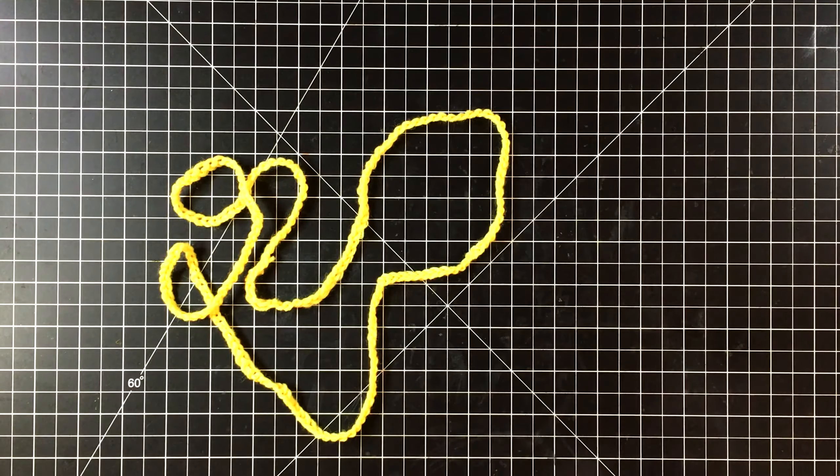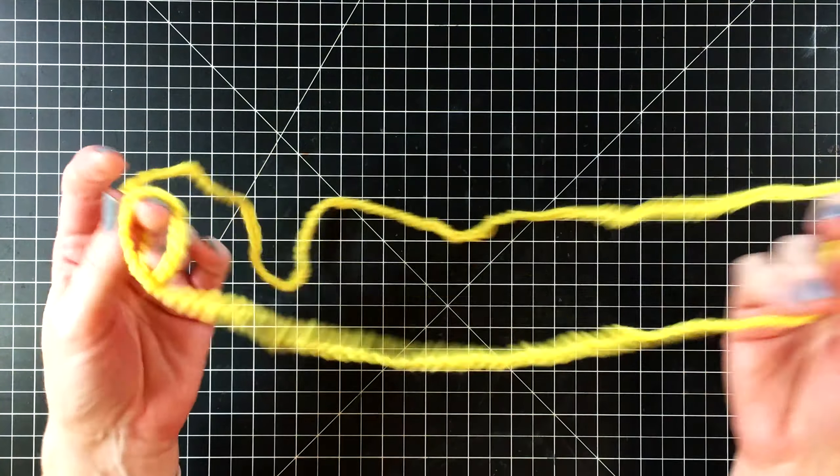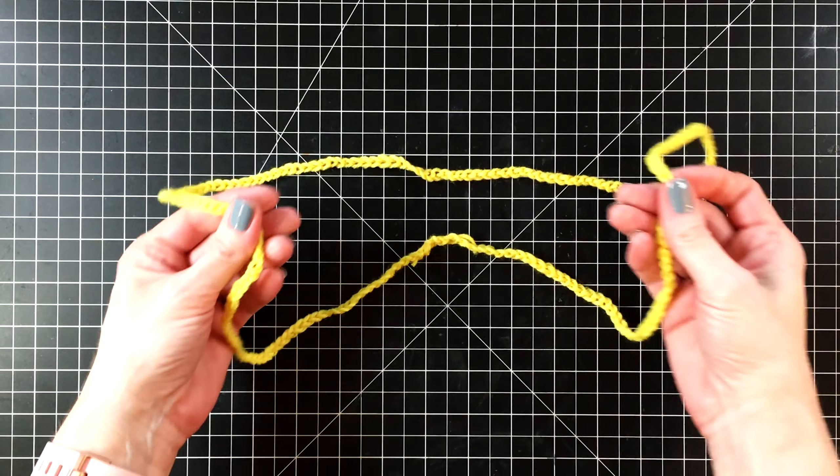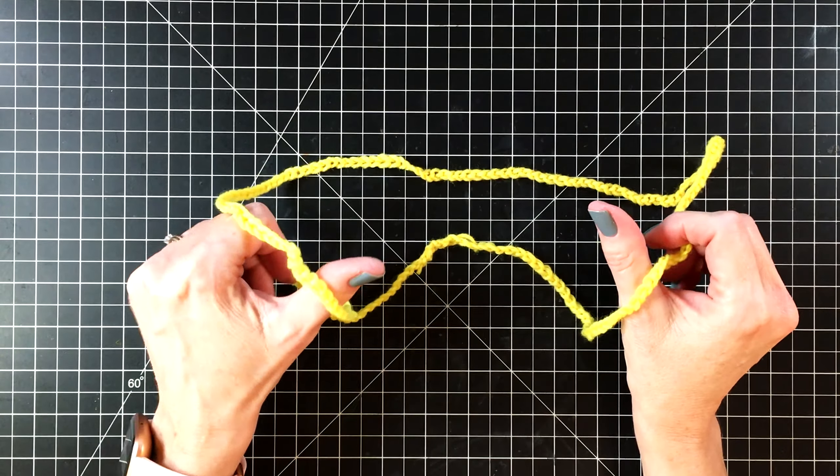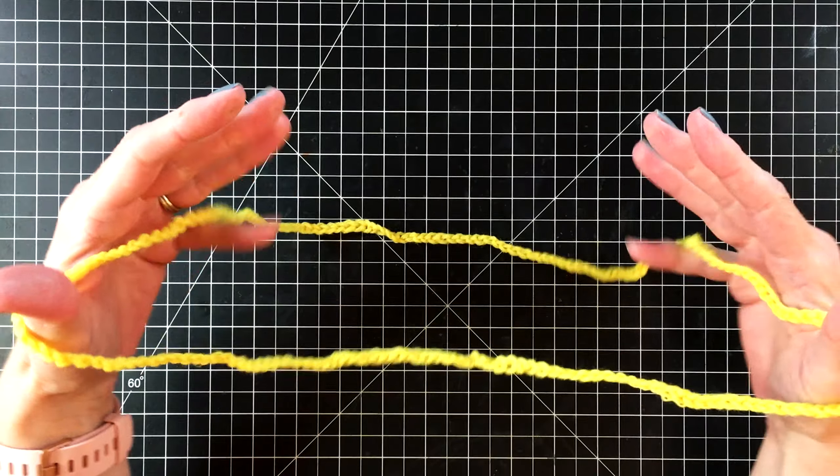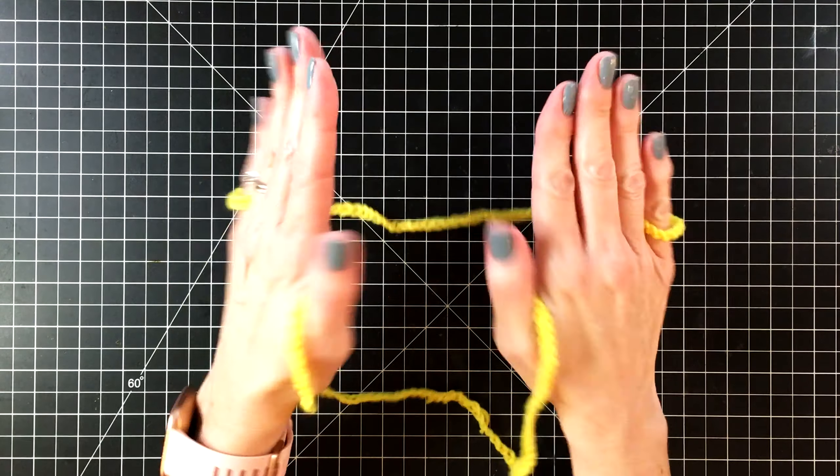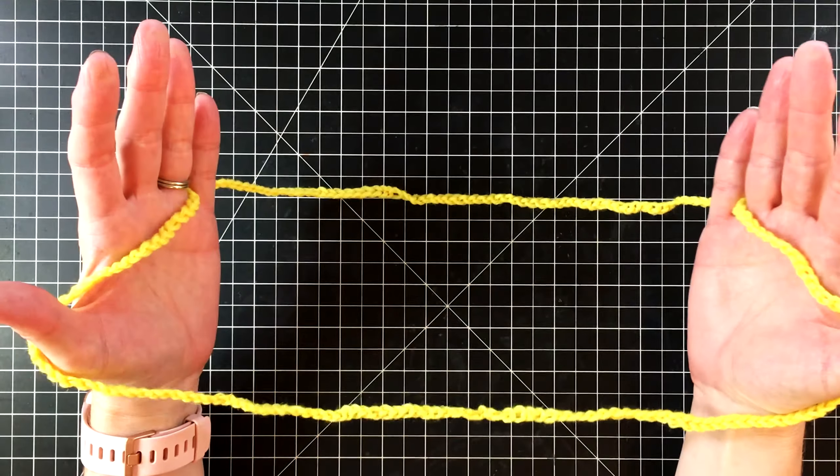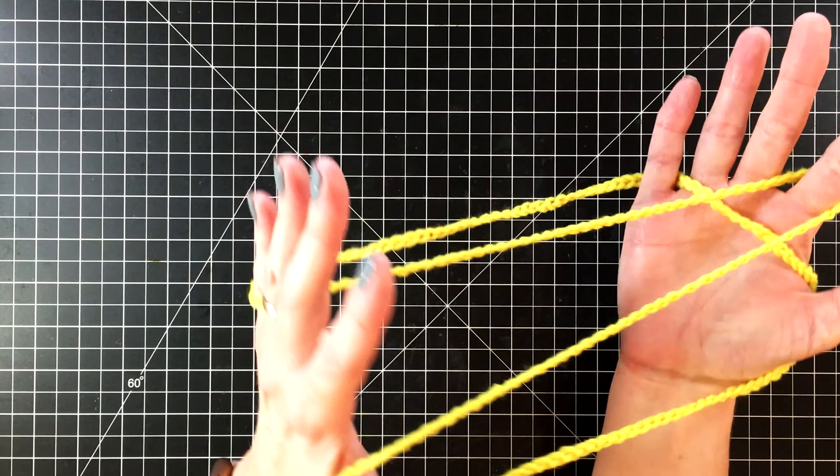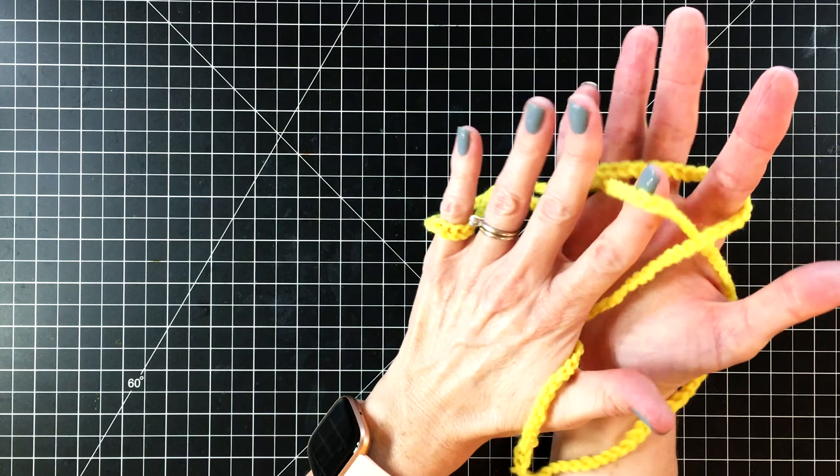If you've never heard of the string game, there's a lot you can do with it. I'm going to show you how to create the cup and saucer figure. So you're going to want to tuck your thumb inside the circle as well as your pinky. The string is going to be in front of your other fingers. Next, you're going to grab the yarn on each side with your pointer finger, like so.